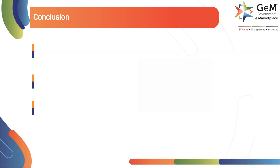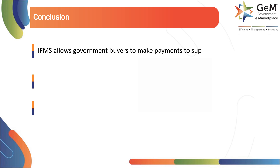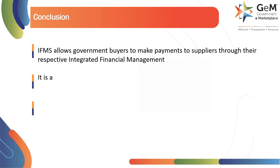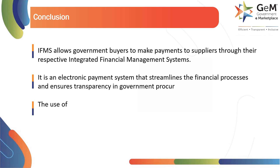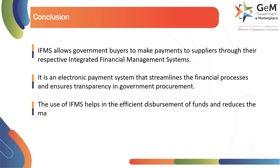Here are some of the important key takeaways of the module. IFMS allows government buyers to make payments to suppliers through their respective Integrated Financial Management Systems. It is an electronic payment system that streamlines financial processes and ensures transparency in government procurement. The use of IFMS helps in the efficient disbursement of funds and reduces the manual paperwork associated with payments.